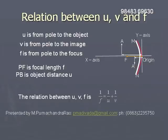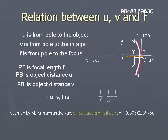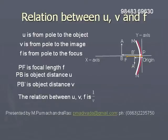PB is the object distance U, and PB' is the image distance V. The relation between U, V, and F is: 1/V + 1/U = 1/F.